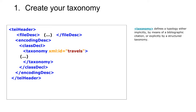In this encodingDesc section, you will create a classDecl element — that is a class declaration — and inside this class declaration, you can have as many taxonomy elements as you need. Each taxonomy can be topical. For instance, here I've created a taxonomy to describe the different types of troubles occurring in the text I'm indexing.